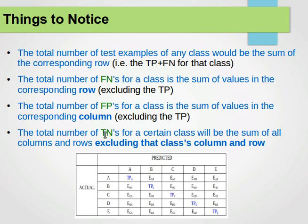The total number of true negatives for a certain class is the sum of all columns and rows excluding the row and column corresponding to that class. So if I want the number of true negatives for class E, I exclude column E and row E and sum everything else. Likewise for class D, I exclude column D and row D and sum everything else. That's how we work out all four values: true positives, false negatives, false positives, and true negatives.